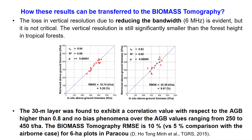Now let's move to discussion. When it comes to satellite, the reduction of the system bandwidth to 6 MHz leads to a significant vertical resolution loss with respect to the original airborne data. However, it is possible to retrieve the forest height to within an accuracy of better than 4 meters, whereas the 30-meter layer reflectivity has a correlation higher than 0.8 with respect to ground data. As you can see in the figure, the biomass tomography error is about 10% compared to 5% for the airborne cases.